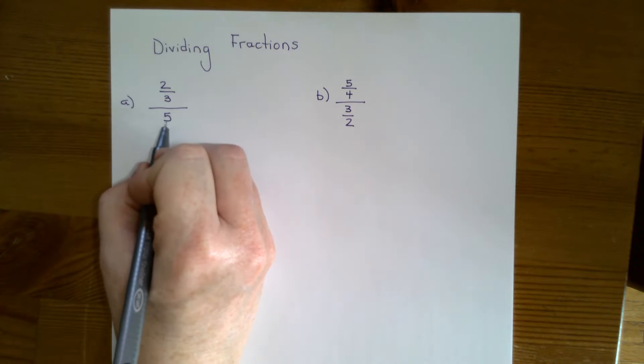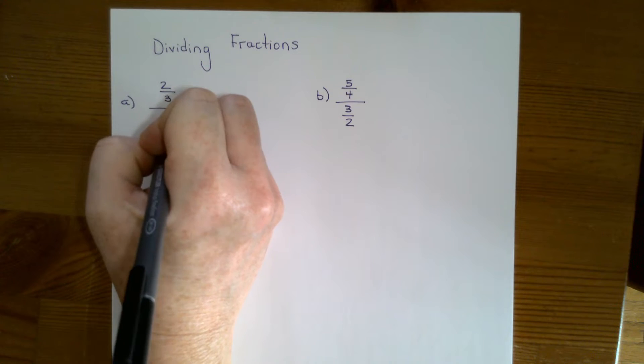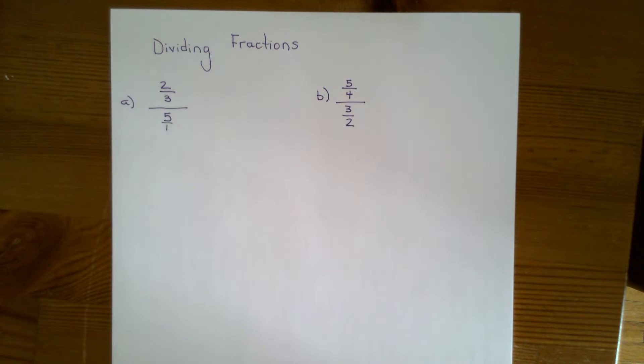So again, there's a whole number here. We need to turn that into a fraction by dividing by one, because five divided by one is still five.